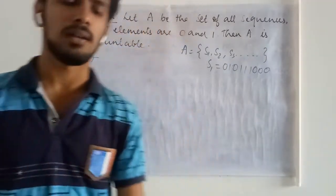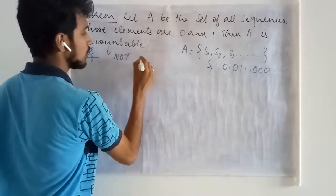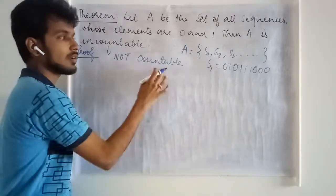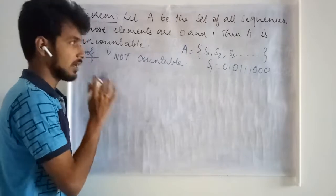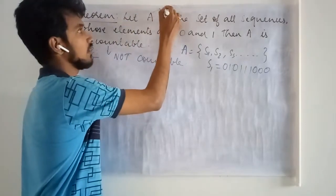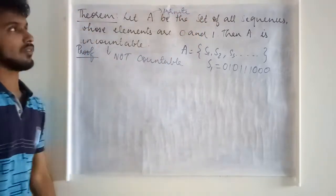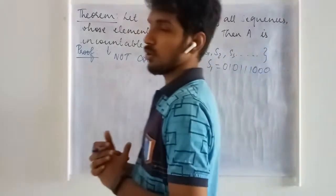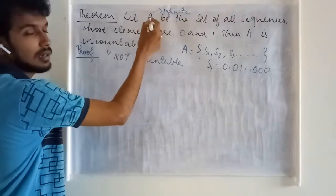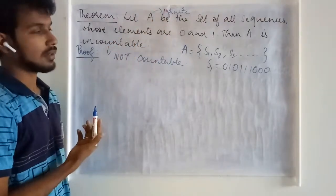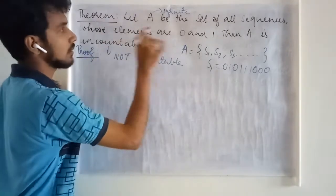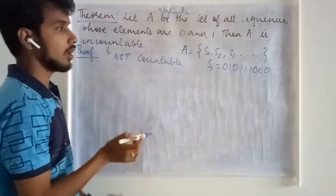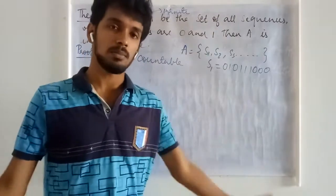When do we say a set is uncountable? If it is not countable, then we can say it is uncountable. We have to first assume that this set is infinite. If the set is infinite and it is not countable, then we can categorize the set as uncountable. First, let us try to show the set is an infinite set. It is given that A consists of all possible sequences whose elements are 0s and 1s.